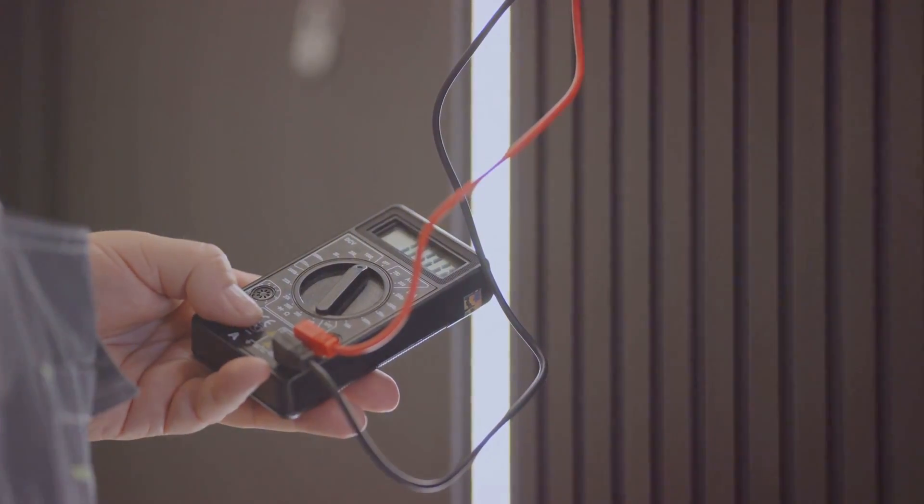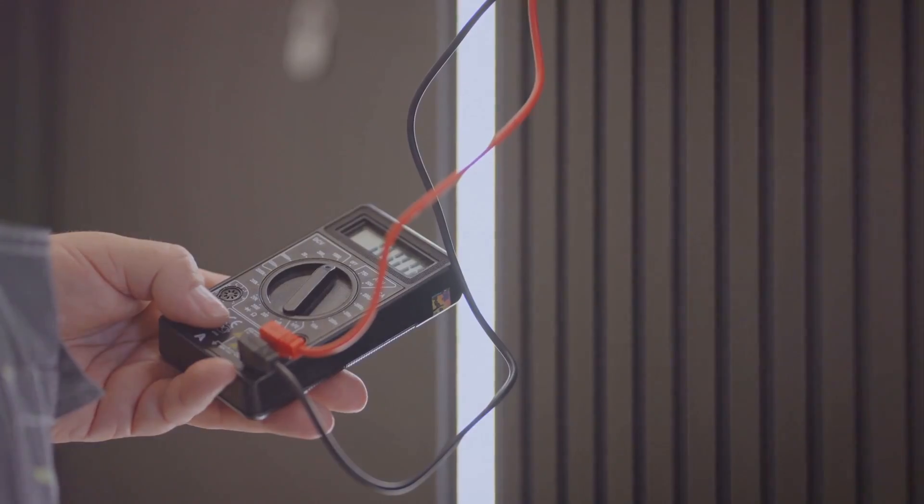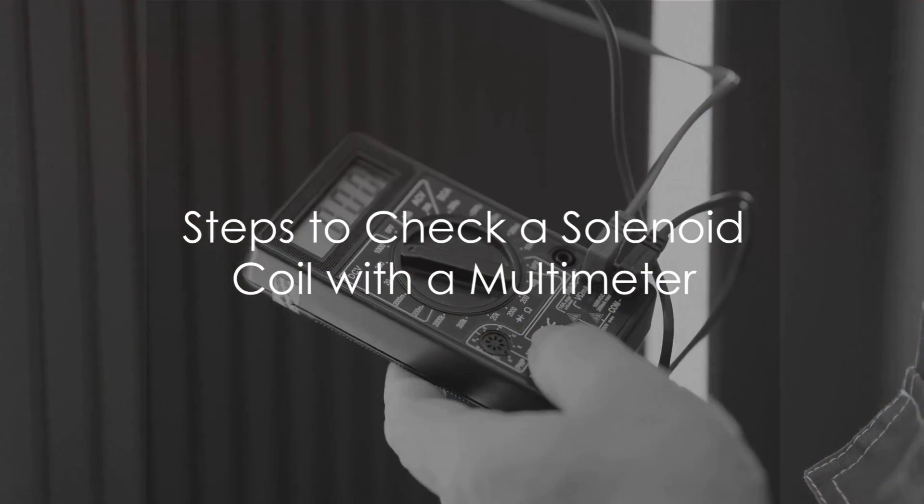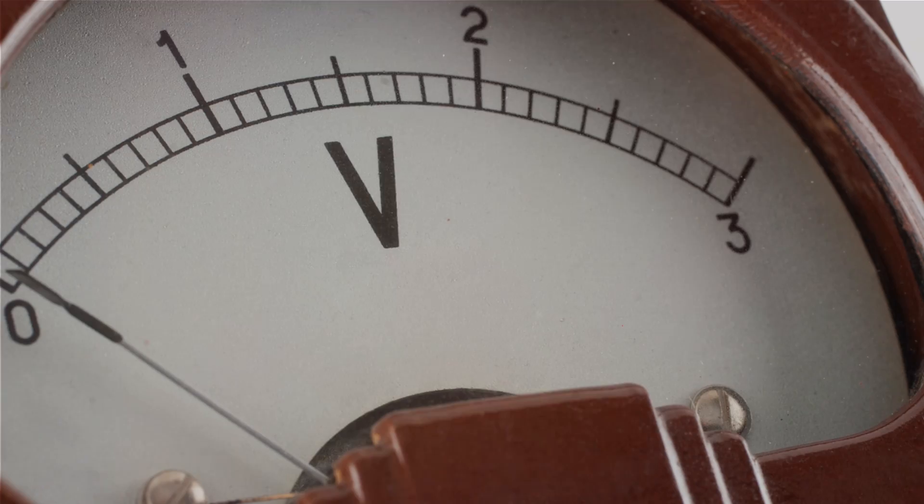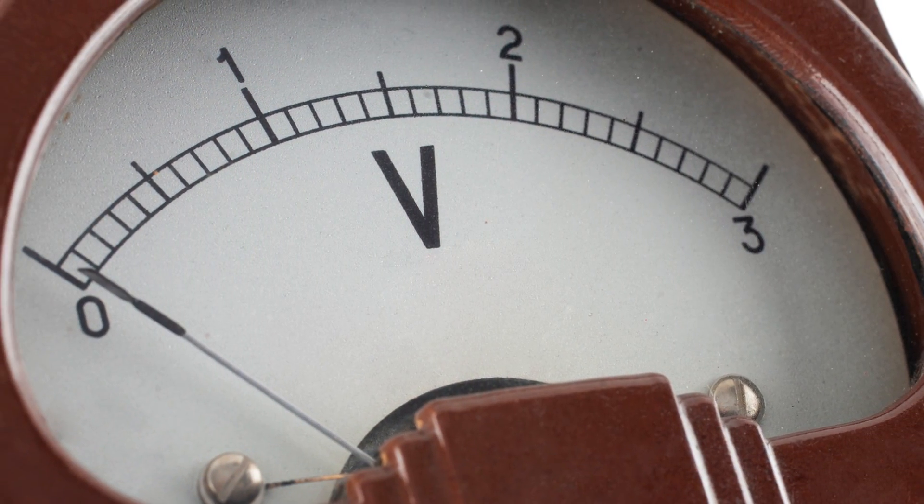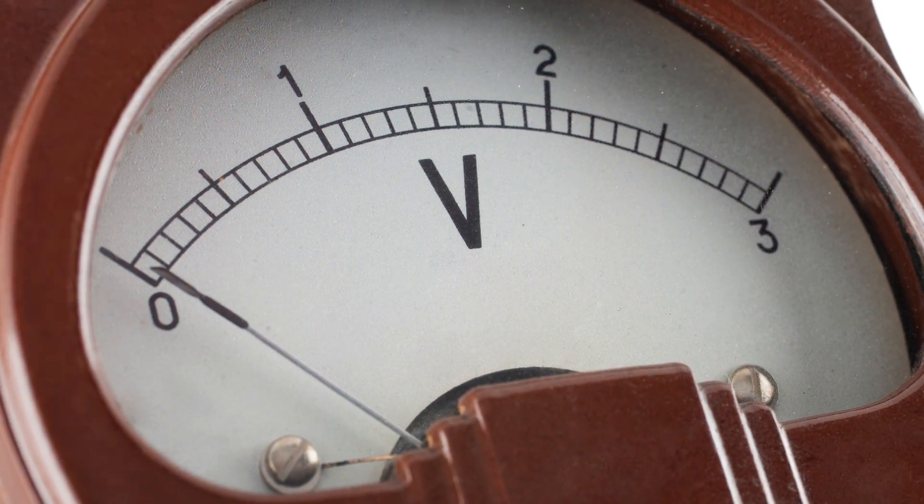Now, let's delve into the method of checking a solenoid coil with a multimeter. First, ensure the multimeter is set to measure resistance. This is usually indicated by the Greek letter omega on the dial.